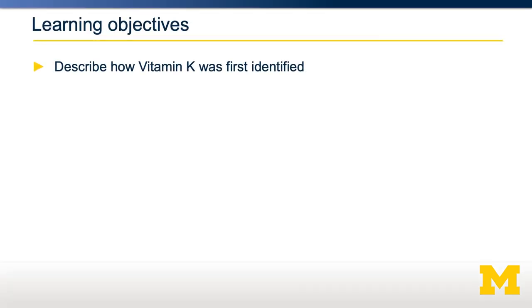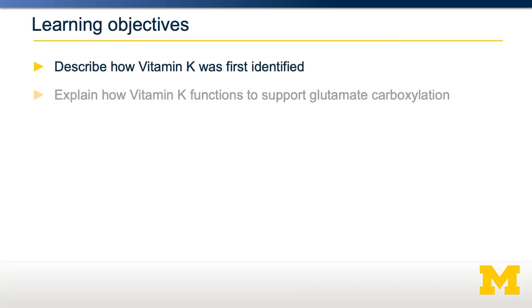Today, we're going to talk about a vitamin called vitamin K and its role in both blood clotting and potentially in cardiovascular disease. We're going to talk about how vitamin K was first identified, how it functions to support a particular chemical reaction called glutamate carboxylation.